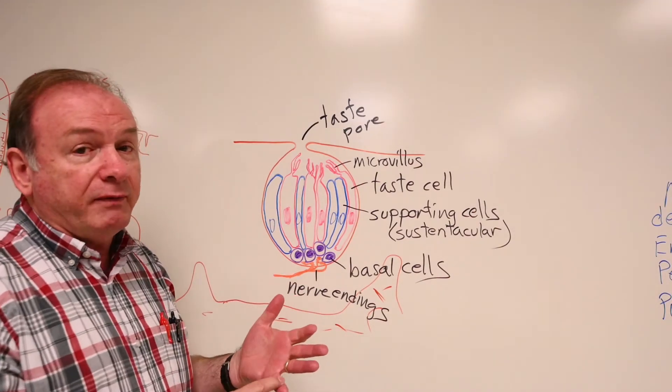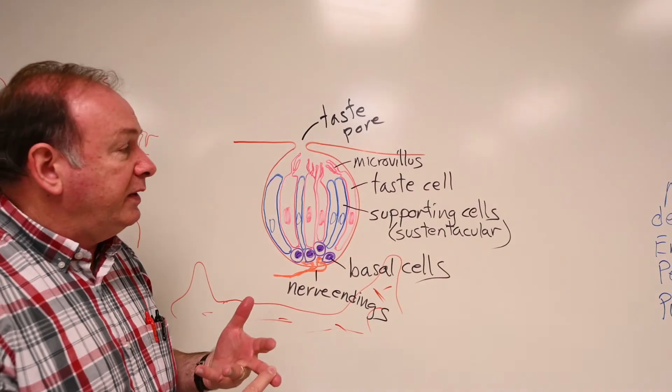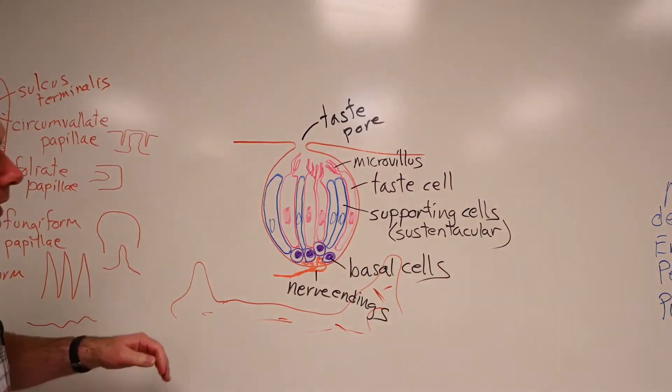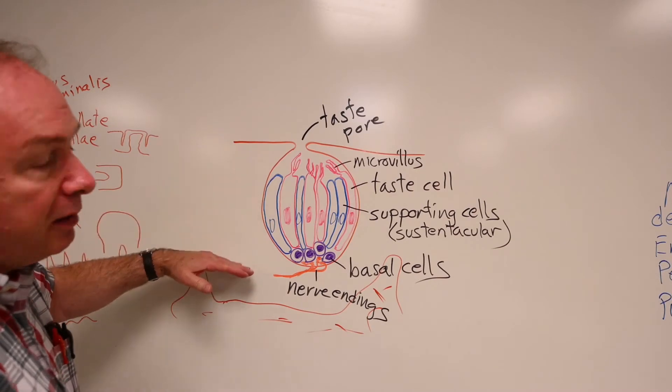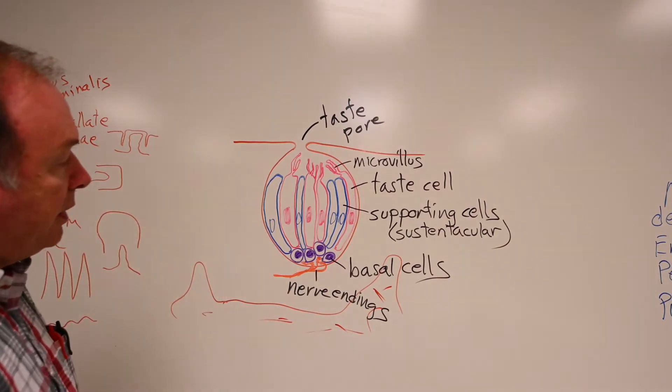Remember, they're on the circumvallate, the foliate, and the fungiform, but not on the filiform papilla of the tongue. And they rest in the epithelial layer on the surface of those papilla types.